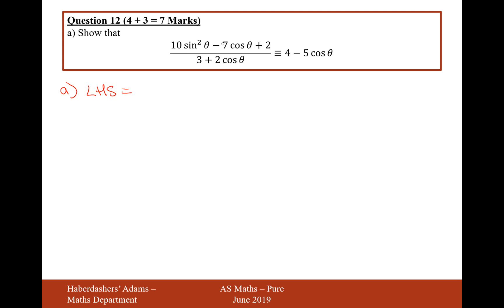But at the moment, we've got sine and cos on the numerator, so I'm going to need to turn the sine squared into 1 minus cos squared to get the ball rolling. So 1 minus cos squared theta minus 7 cos theta plus 2. Let's expand the brackets. It's going to be over 3 plus 2 cos theta.